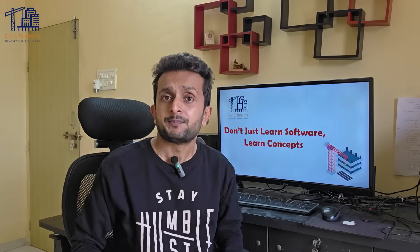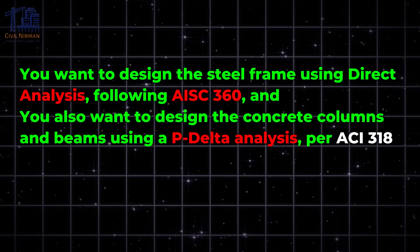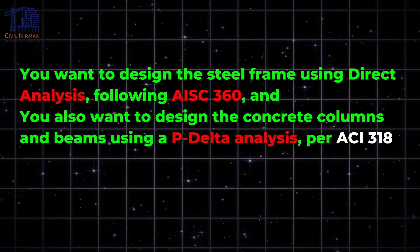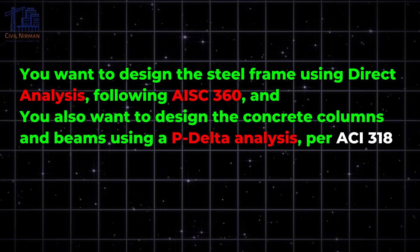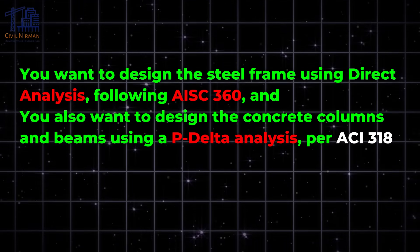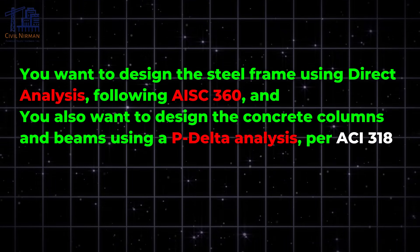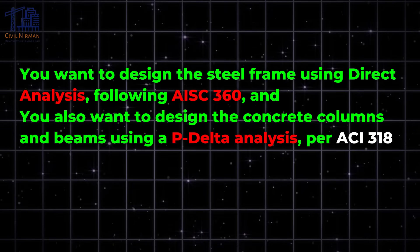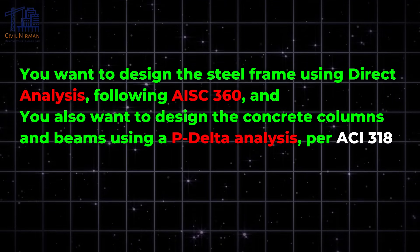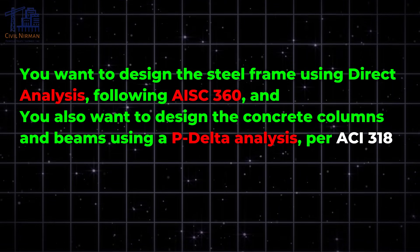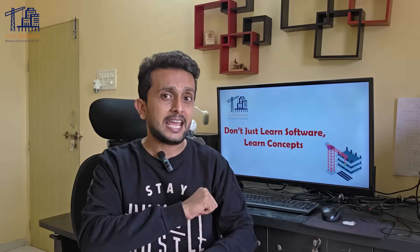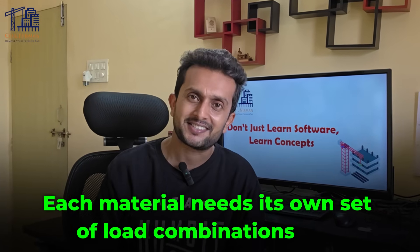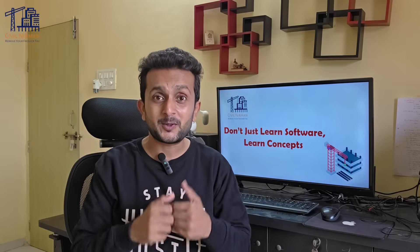Let's say you have a steel frame structure sitting on a concrete podium — a pretty common scenario in the real world. You want to design the steel frame using direct analysis following AISC 360, and you also want to design the concrete columns and beams using P-delta analysis as per ACI 318. The catch is that each material needs its own set of load combinations.